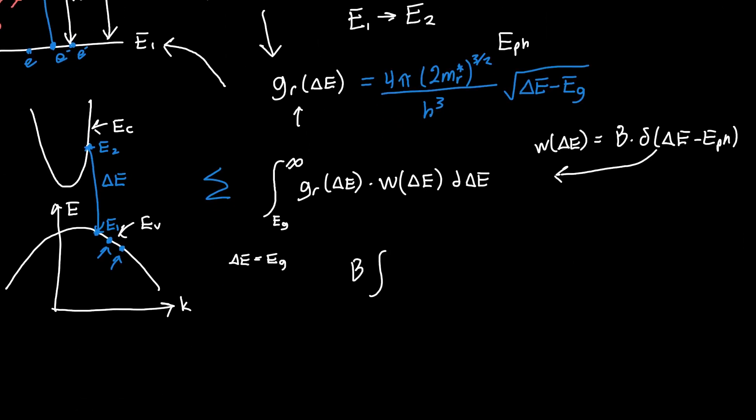we're now just integrating from EG to infinity our reduced density of states multiplied by this delta function, delta E minus our photon energy. And so this delta function makes it so we don't even need to evaluate this integral. This just becomes our density of states at the photon energy multiplied by this pre-factor B. And this is the sifting property of the delta function. If you've taken some signal processing classes before, you'll be very familiar with this, or electromagnetics or a variety of other places where the delta function shows up.